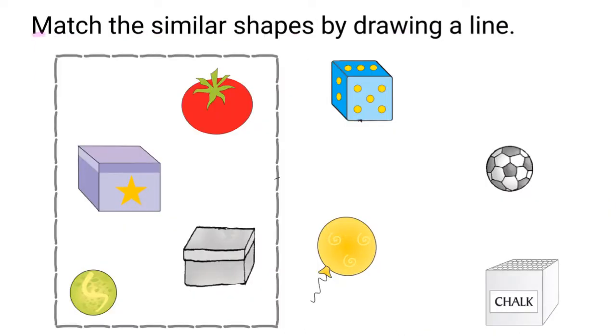Match the similar shapes by drawing a line. The word similar means same — the objects that look the same. We need to draw a line to match them.